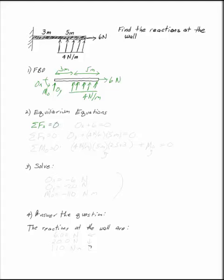My equilibrium equations give me OX plus six equals zero. Sum of the forces in Y, OY. Now I want to figure out what the equivalent point load is.